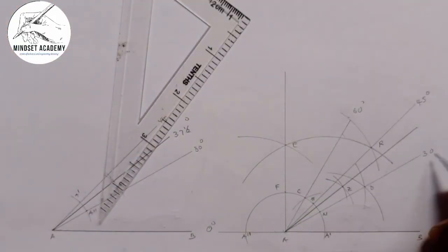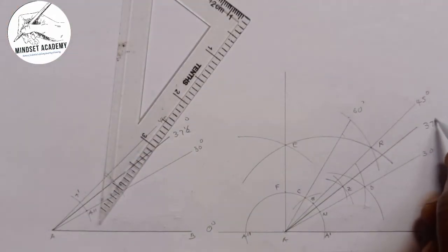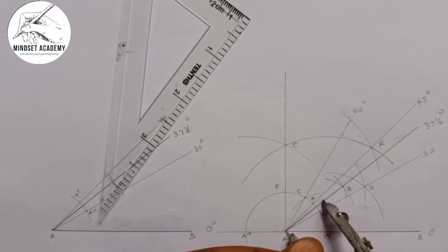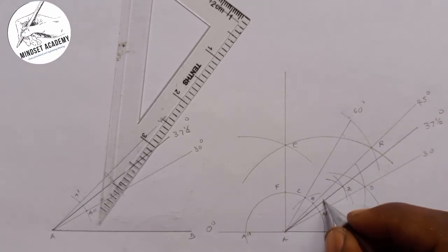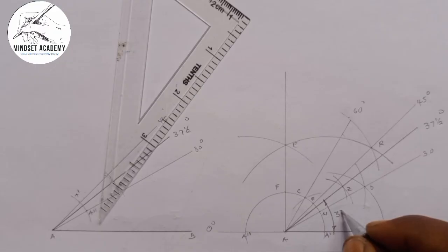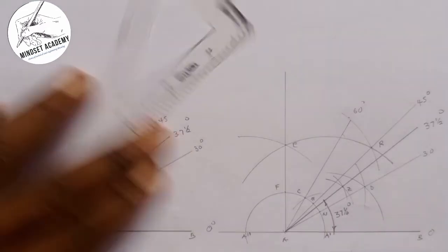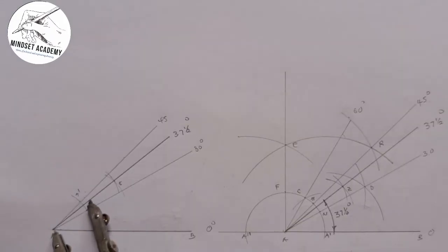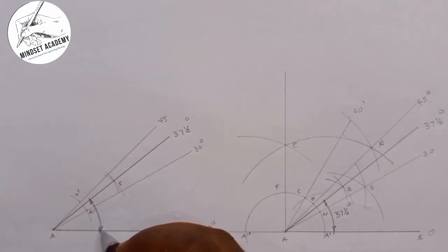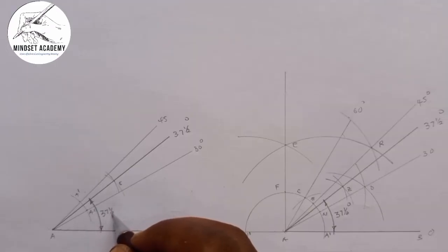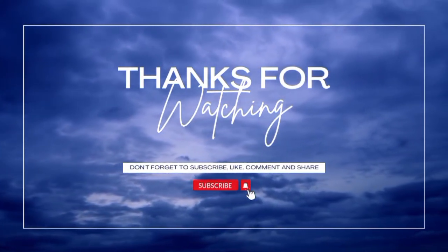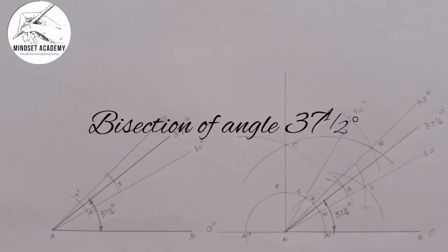So 30 plus 7.5 gives 37.5 degrees. The angle between the 30-degree line and the 7.5-degree bisector line, measured from the baseline, is 37.5 degrees — the same result as before. If you found this video helpful, please don't forget to subscribe, like, and share. Thanks for watching.